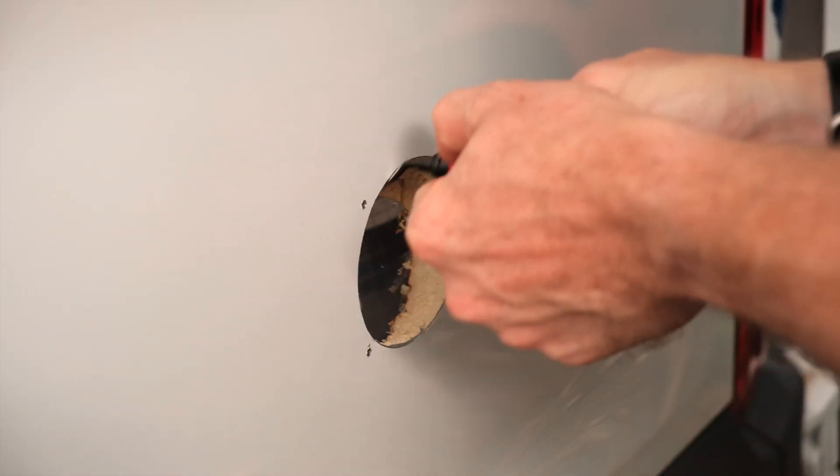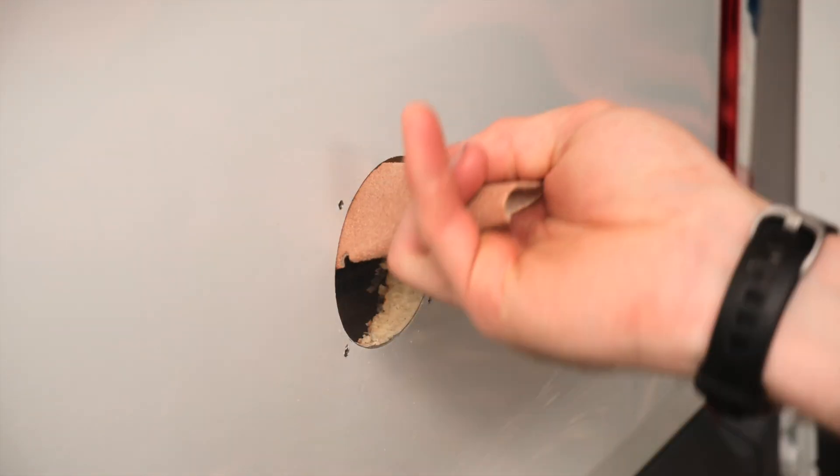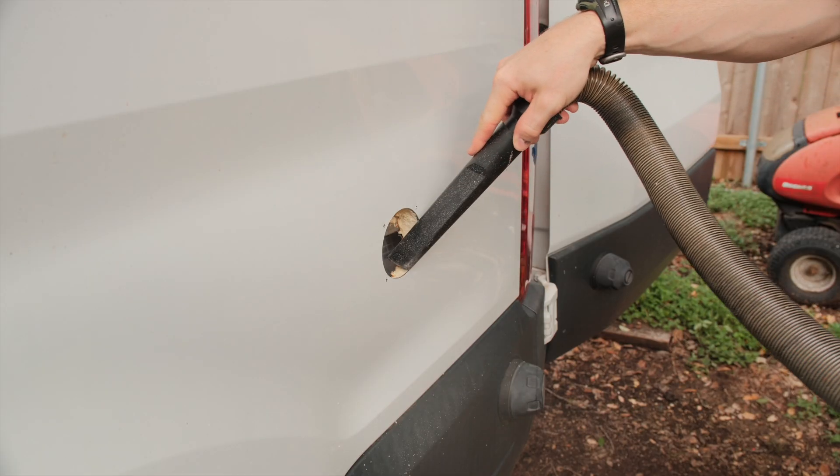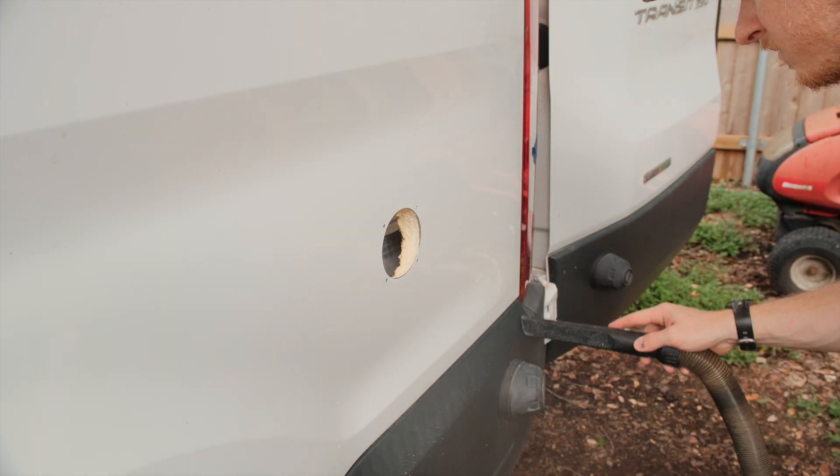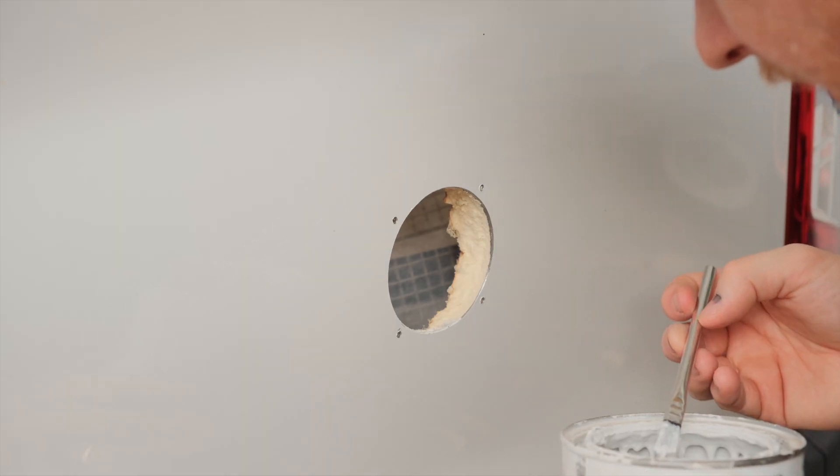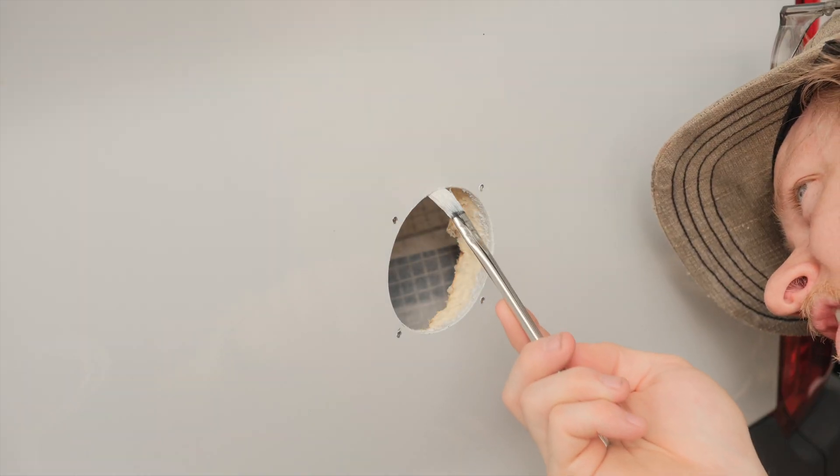After this, I used a metal deburring tool followed by some sandpaper to smooth out the edges of the hole. We are almost ready to paint, but first I used a vacuum to clean up any metal shavings from the surrounding area. Then I primed the freshly exposed metal edges with some Rust-Oleum Clean Metal Primer.